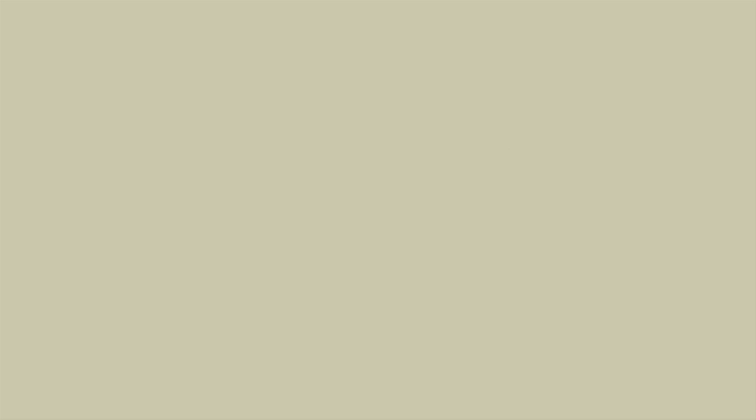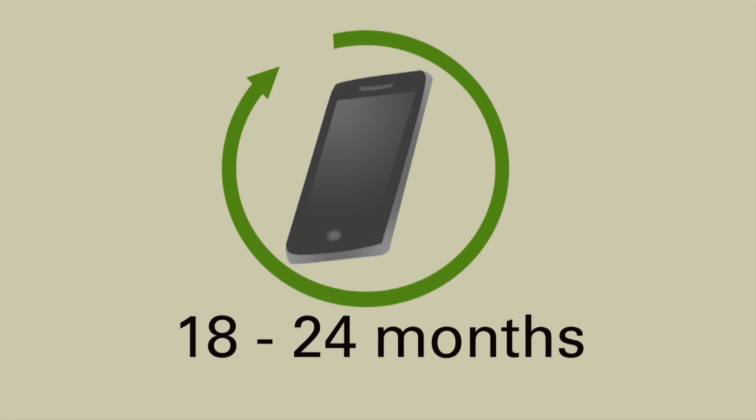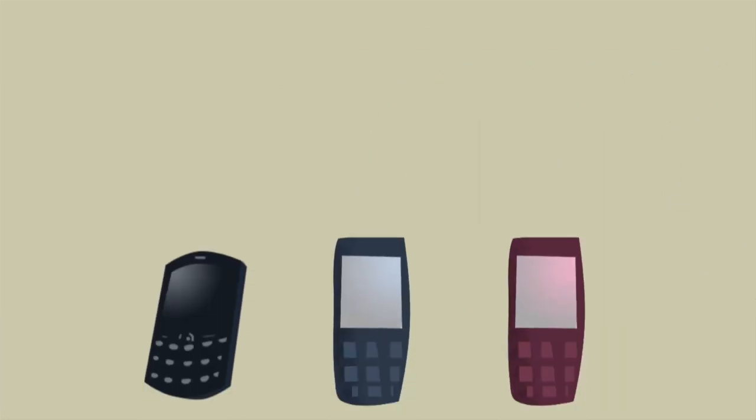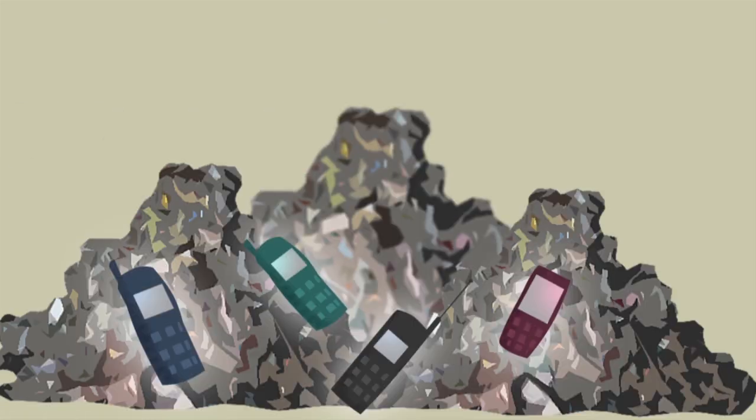However, the lifetime of a mobile or cell phone is estimated it's only between 18 to 24 months. This means that existing phones are exchanged for newer models, so more and more old phones are being dumped.